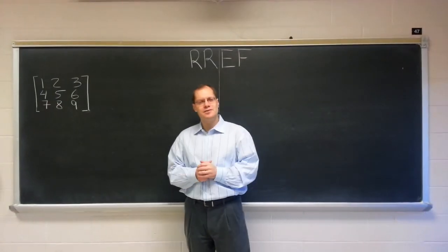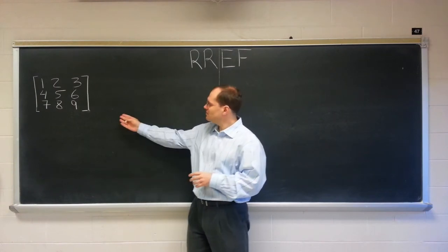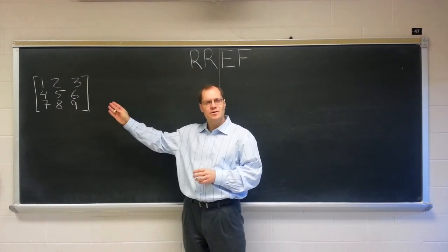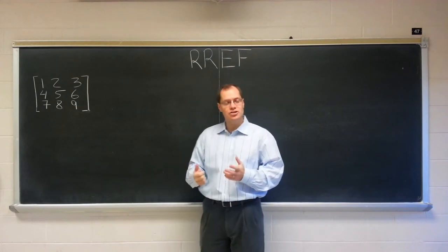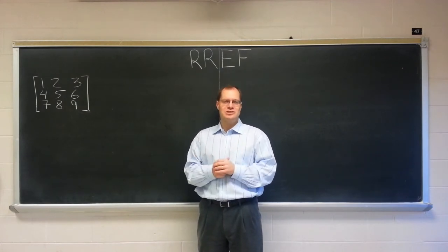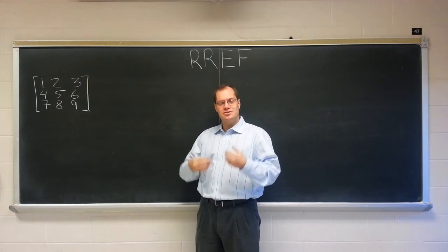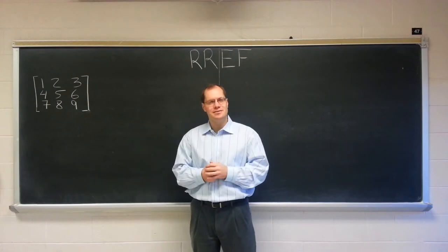Maybe you want to pause the video for a moment and try to figure it out before I reveal it. Because you might not be able to see it by just looking at the matrix, and that's a good thing. That's what Gauss elimination and the row reduced echelon form are for, to reveal the relationship among the columns if you can't see them easily.